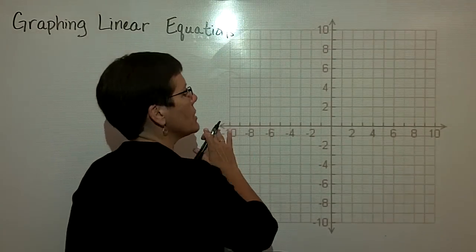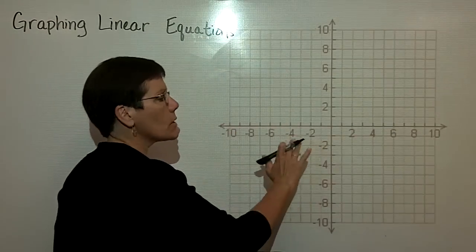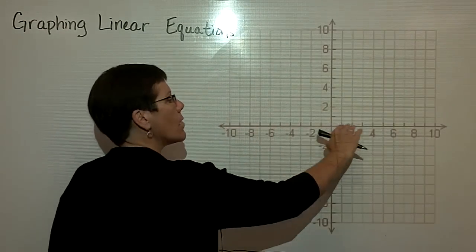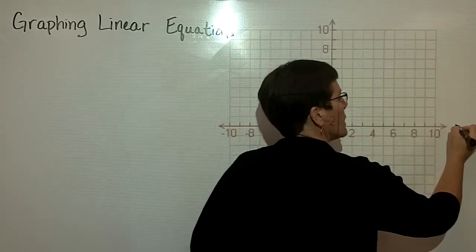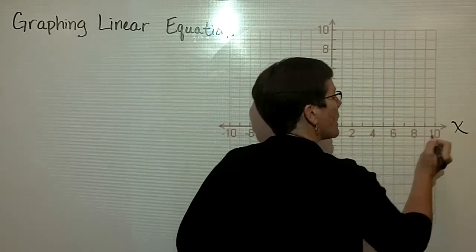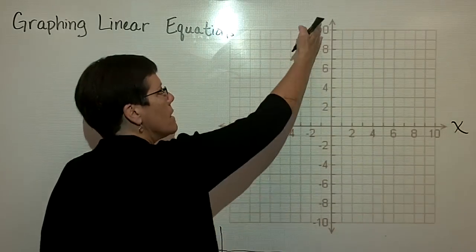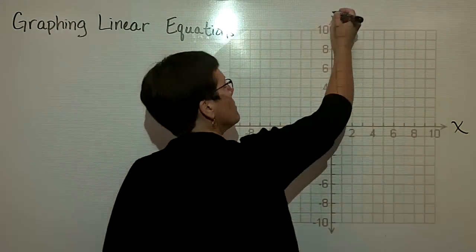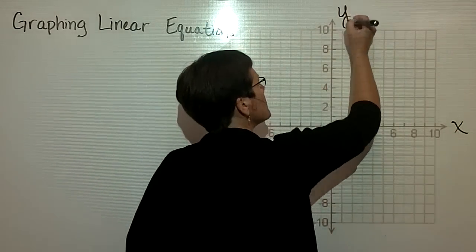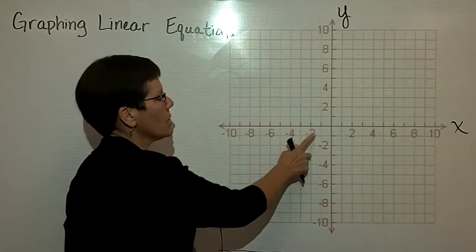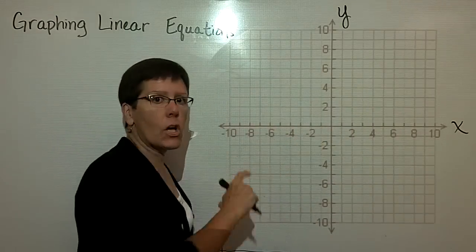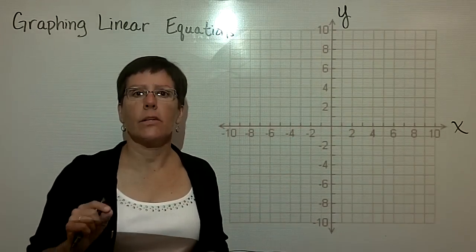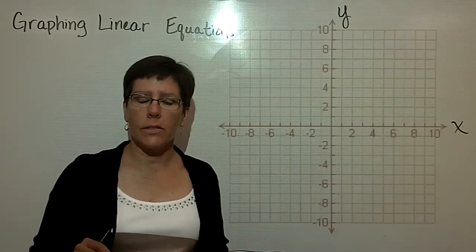In the rectangular coordinate system, this line right here is called the x-axis, and this line right here is called the y-axis. The point where they intersect right here is called the origin, and that point is where x is zero and y is zero.